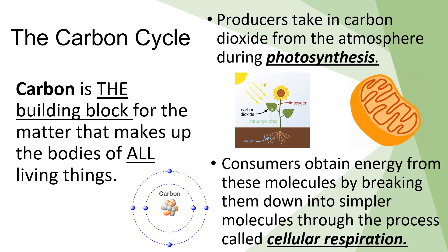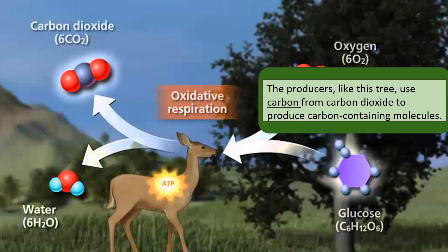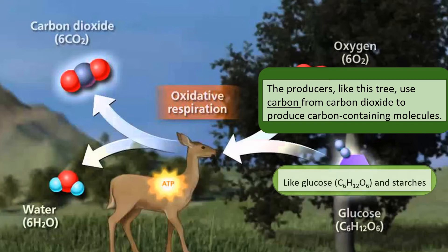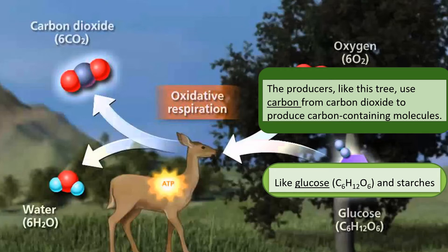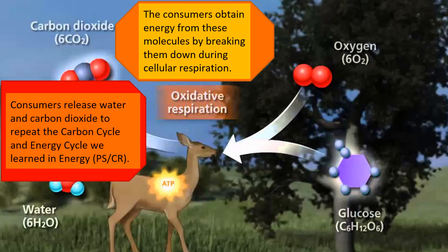Going through the full cycle: producers, like a tree, use carbon from carbon dioxide to produce carbon-containing molecules like glucose and starches. This glucose is taken in by consumers, who then break down that glucose during cellular respiration. Consumers then release water and carbon dioxide, repeating the carbon cycle and energy cycle.